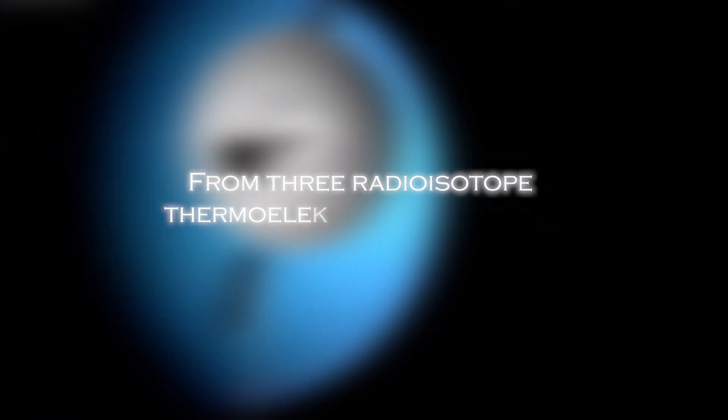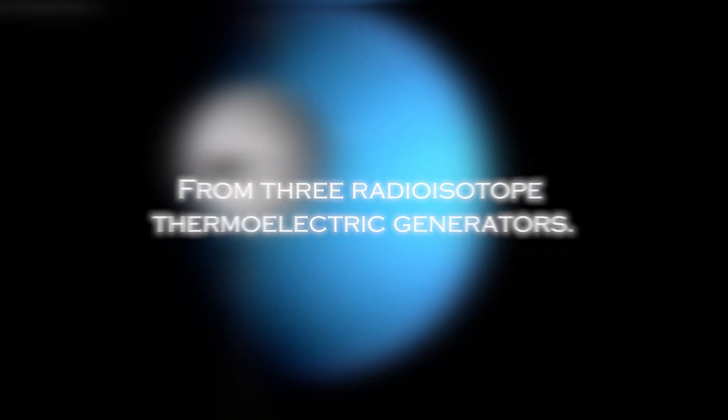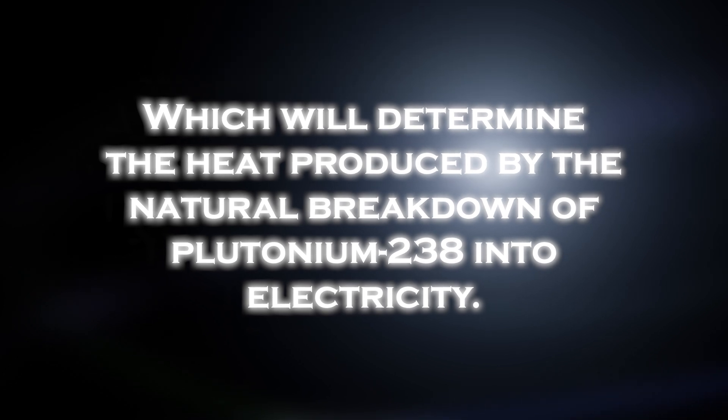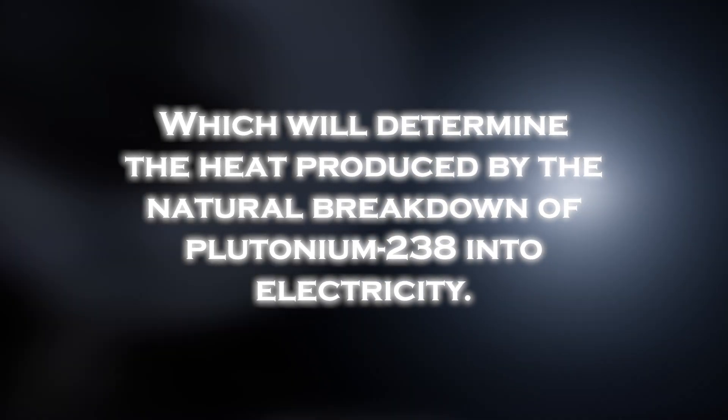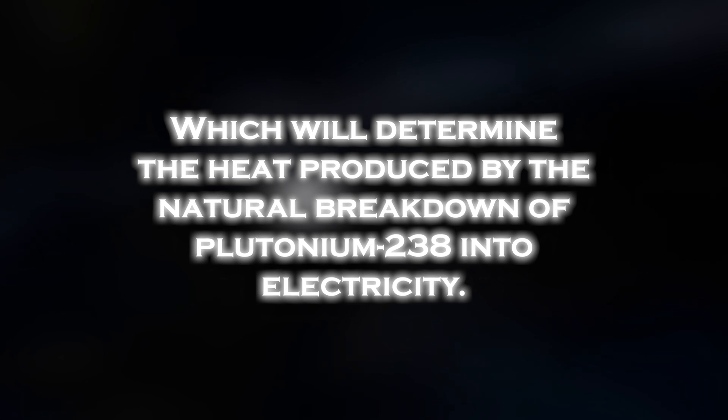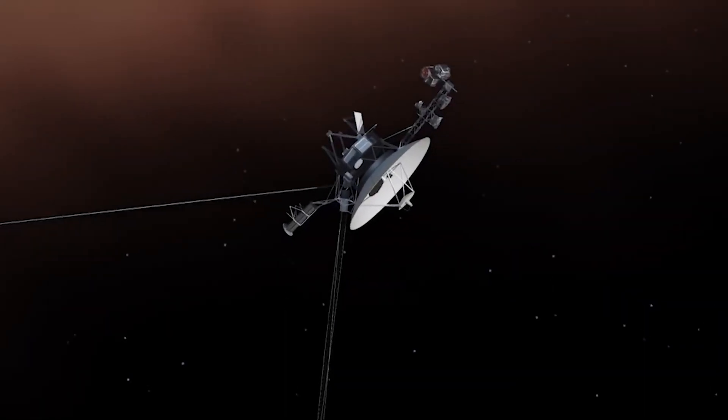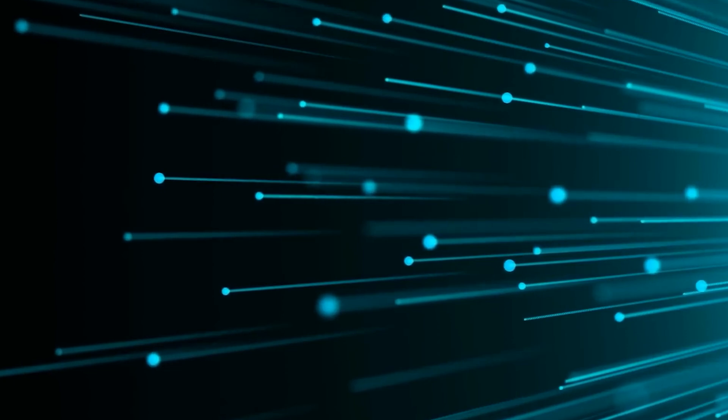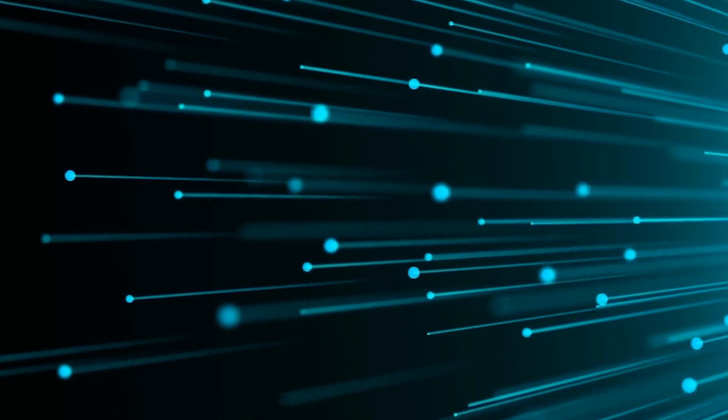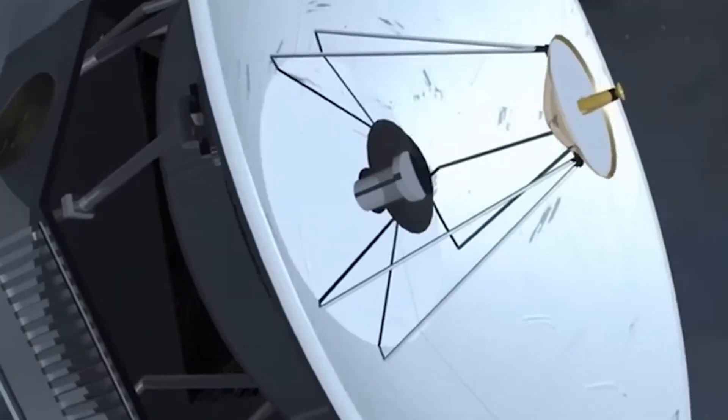The spacecraft's power is generated primarily from three radioisotope thermoelectric generators, which convert the heat produced by the natural breakdown of plutonium-238 into electricity. As the heat output of the thermoelectric generators has decreased over time, the available power has decreased.